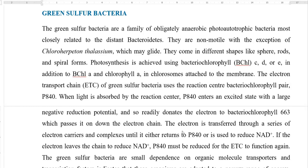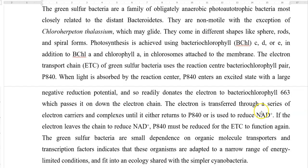The electron transport chain of green sulfur bacteria uses the reaction center bacterial chlorophyll pair P840. When light is absorbed by this reaction center P840 chlorophyll, it enters an excited state with a large negative reduction potential, so it readily donates an electron to bacterial chlorophyll 663, which passes it down the electron transport chain. Electrons are transferred through a series of electron carriers and complexes until they either return to the P840 bacterial chlorophyll or are used to reduce NAD to NADH₂.